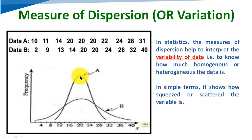Looking at the figure, data A is in a squeezed form, whereas data B shows data that is somewhat scattered. So whatever the variability of the data is, that we can understand with the help of the measure of dispersion.